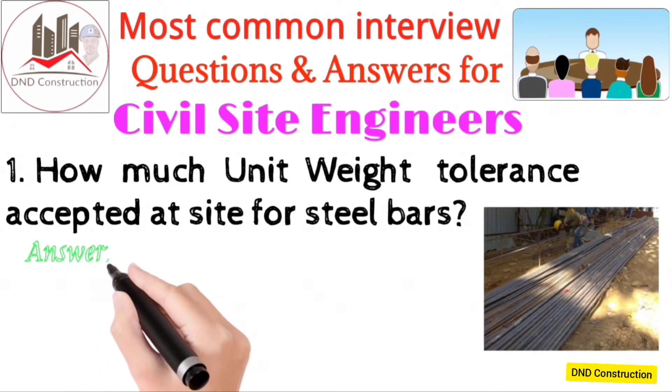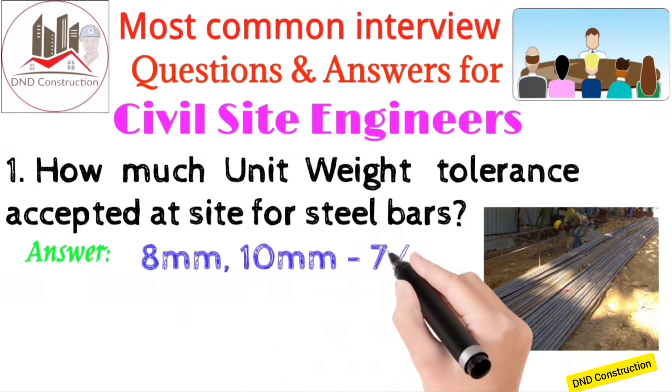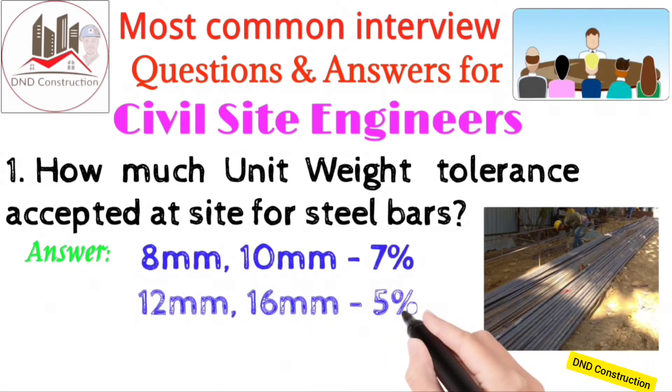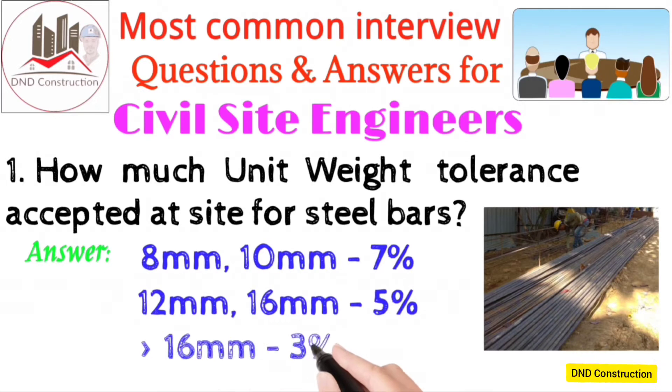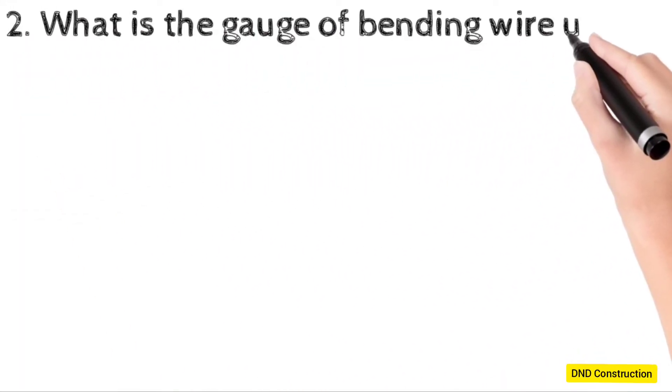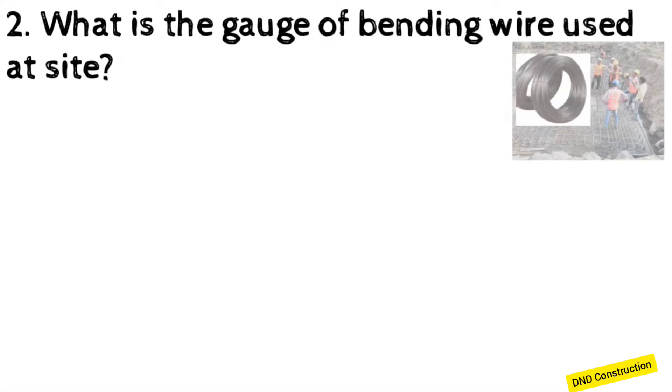For 8mm, 10mm bars: 7 percent. For 12mm, 16mm bars: 5 percent. And greater than 16mm bar: 3 percent. What is the gauge of bending wire used at site?